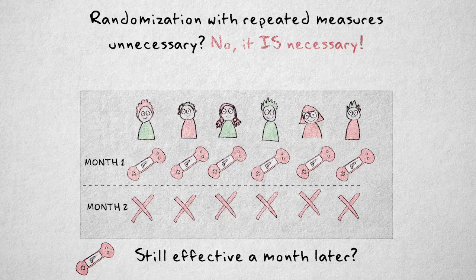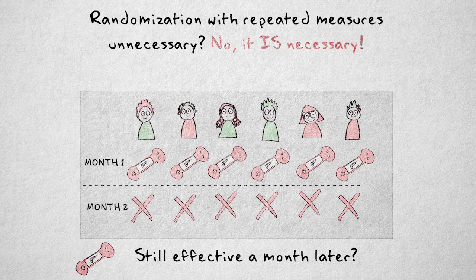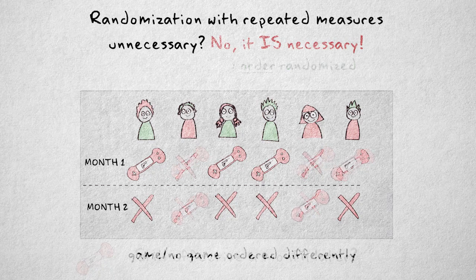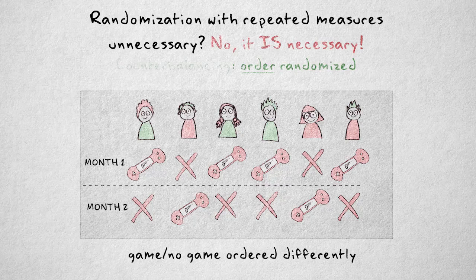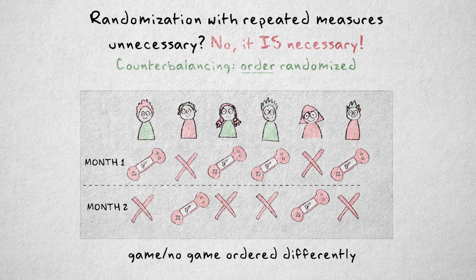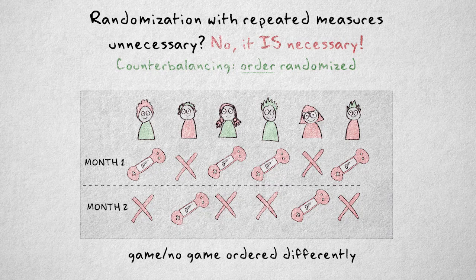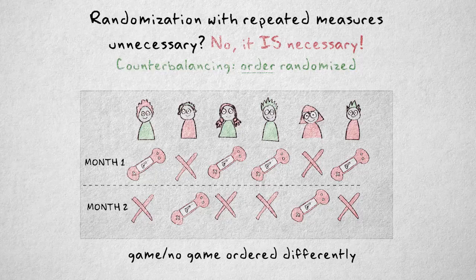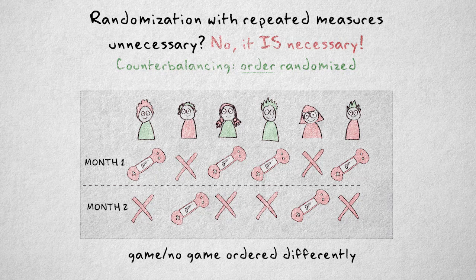So with within subjects designs, the order in which subjects are exposed to the conditions should be randomized. We call this counterbalancing. Subjects are assigned to one out of all possible orderings of the conditions, possibly using blocking to ensure that no one ordering is overrepresented.